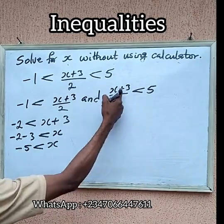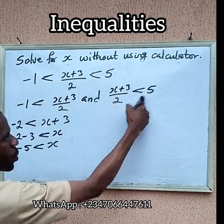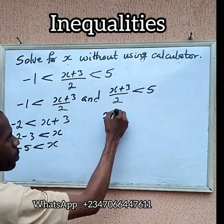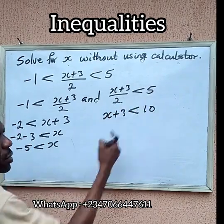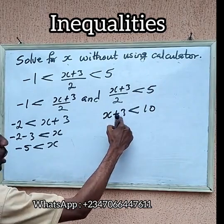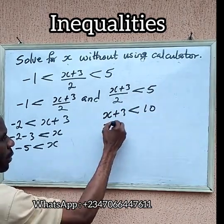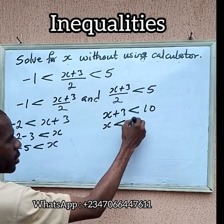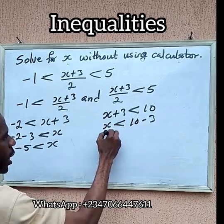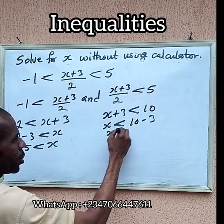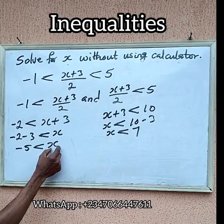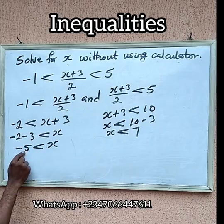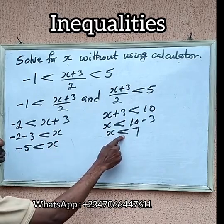Now let us come to this side. If you come to this side, what you do, we cross multiply, we're going to have x+3 less than 10, because 2 times 5 is 10. Then you take this one, take it to the other side so that we can have x less than 10 minus 3. So x is less than 7.